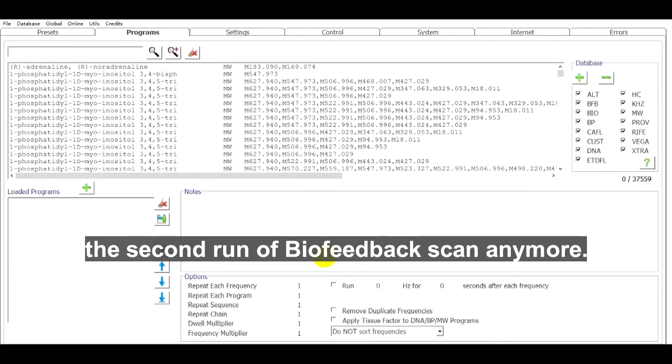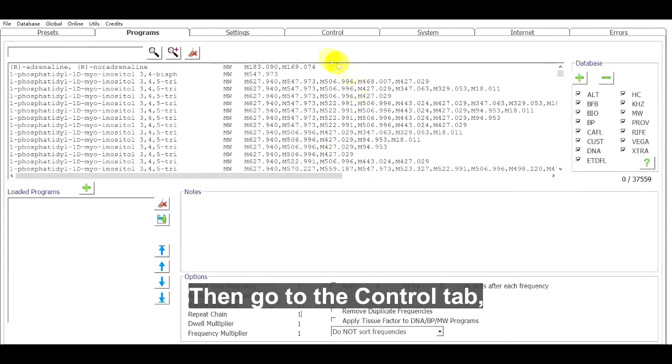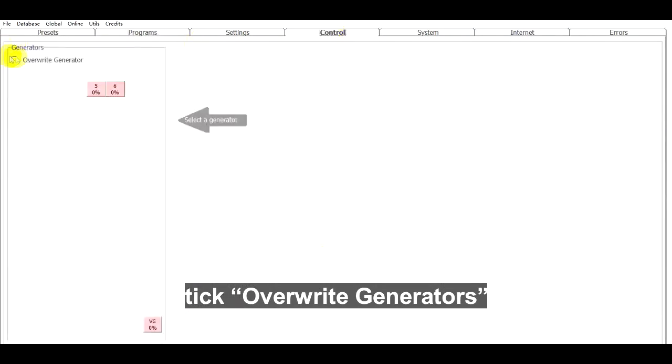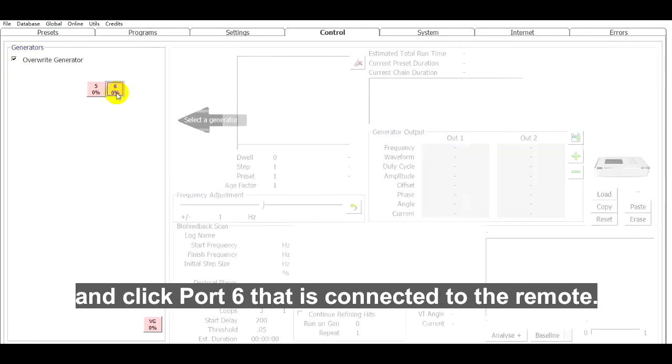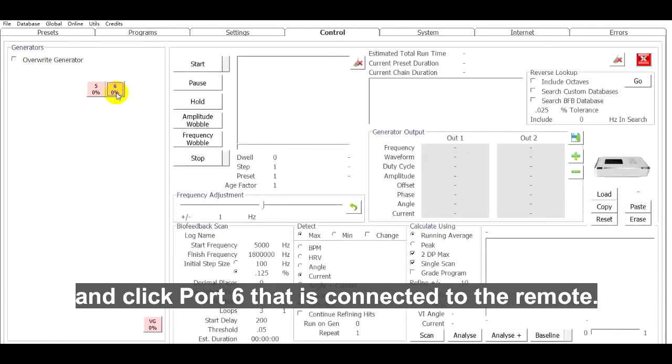Then go to the Control tab, tick Overwrite Generators and click port 6 that is connected to the remote.